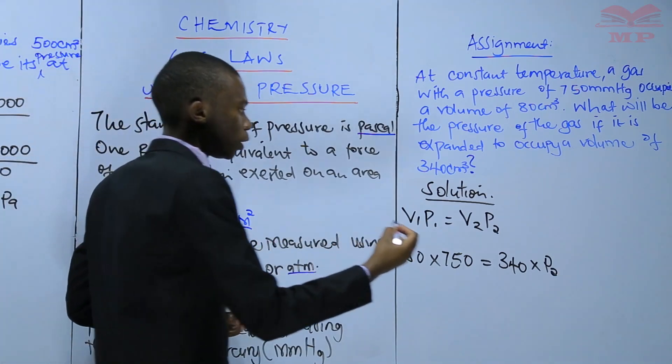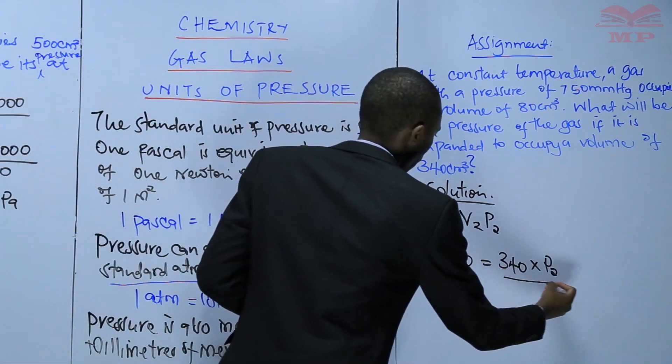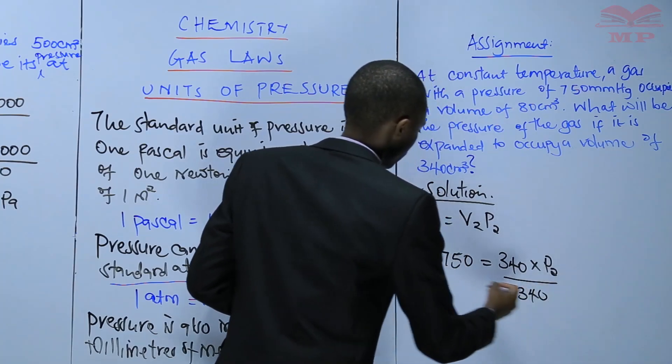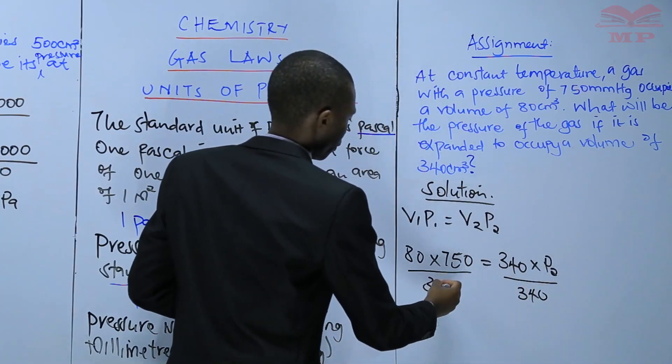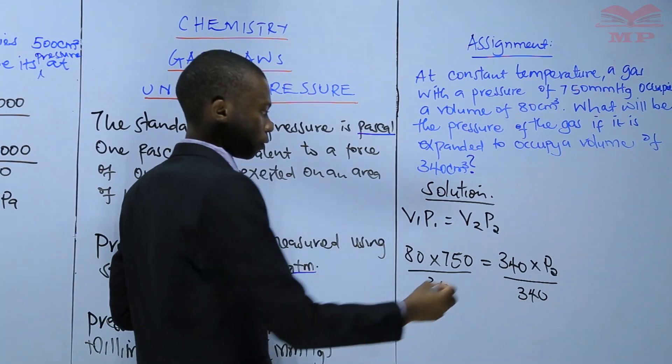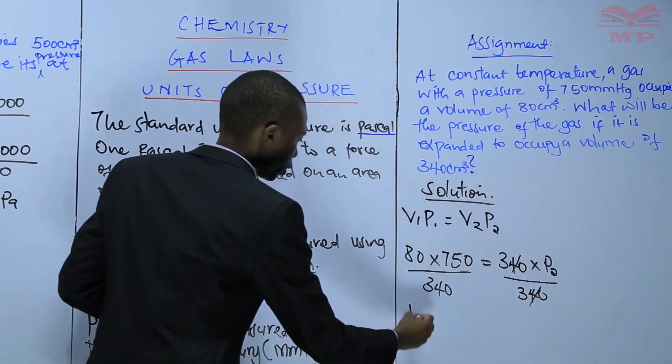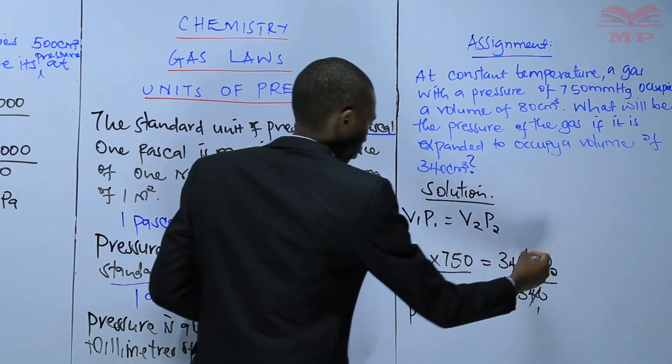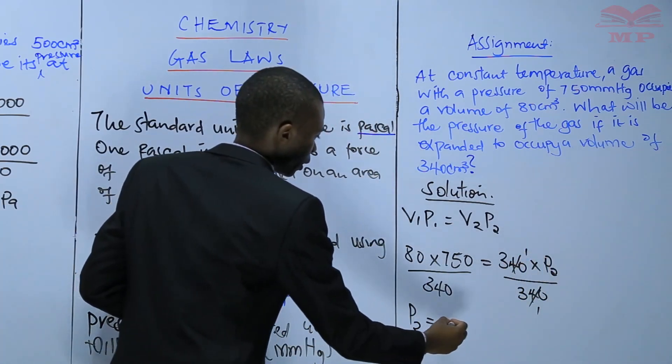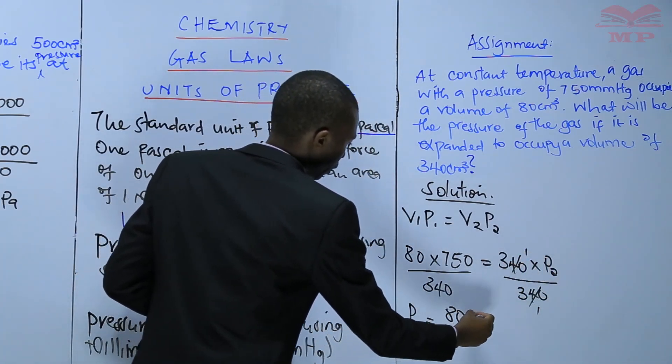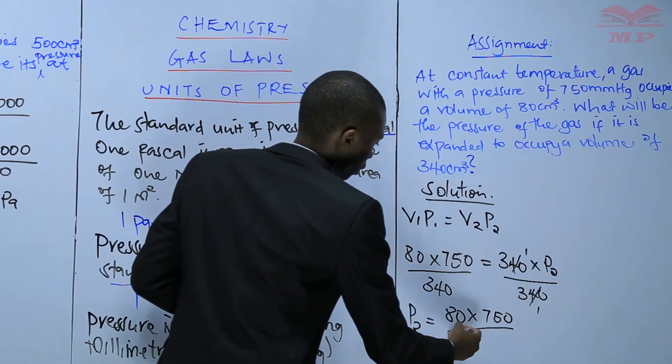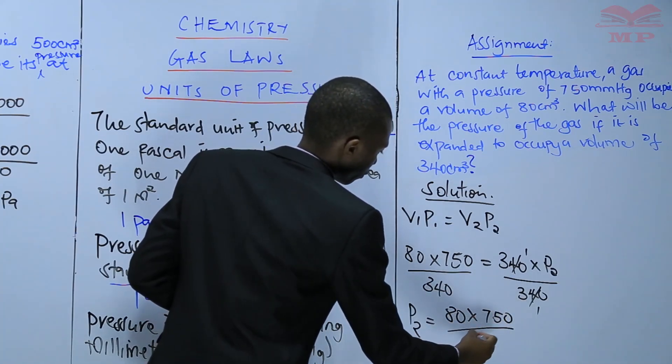Therefore, to get P2, we have to divide both sides by 340. This will cancel out, and P2, when we cancel out, we get 1. Therefore, P2 will be 80 multiplied by 750 divided by 340.